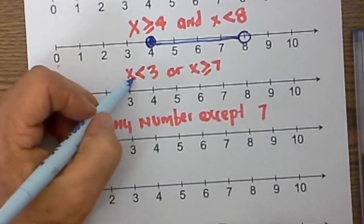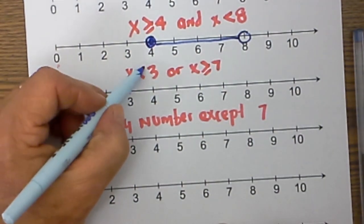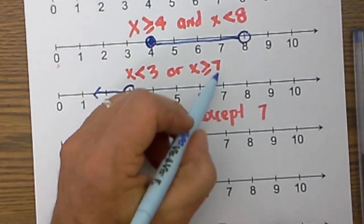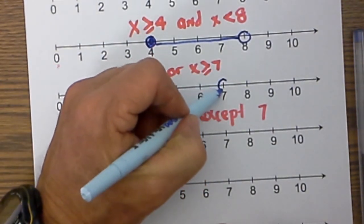Next, x is less than 3, so it is open, and it is greater than or equal to 7.